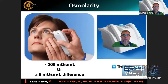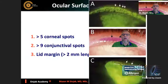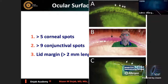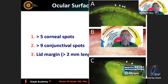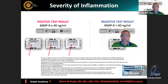The cutoff values for osmolarity indicate dry eye disease above certain thresholds. Ocular surface staining is defined as more than five corneal spots, or more than nine conjunctival spots, or lid margin staining of more than two millimeters in length. Every case of dry eye disease is associated with inflammation according to TFOS DEWS2. MMP-9 testing does not diagnose dry eye; it only tests the severity of associated inflammation.